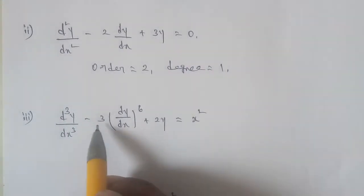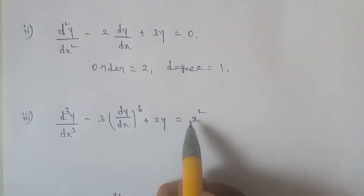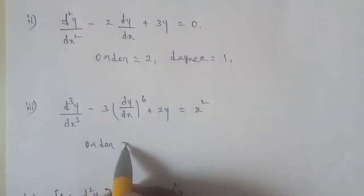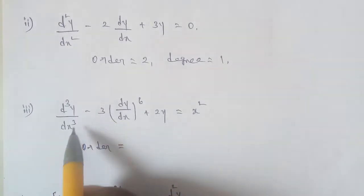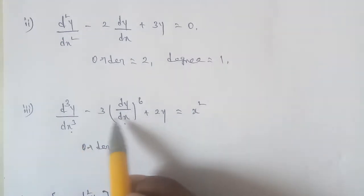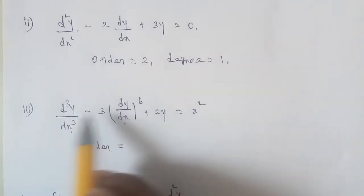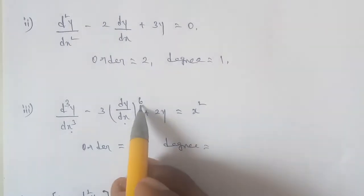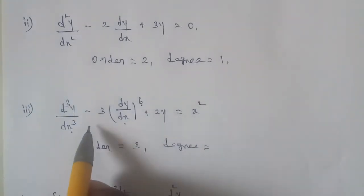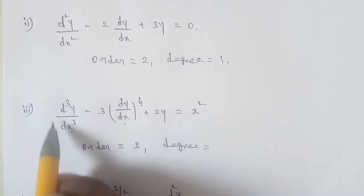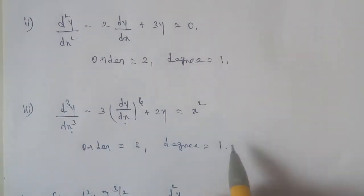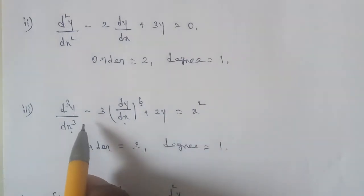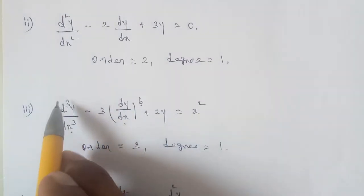Sub-question 3: d³y/dx³ - 3·(dy/dx)⁶ + 2y = x². The highest order derivative is d³y/dx³, so the order is 3. The power of d³y/dx³ is 1, so the degree is 1.